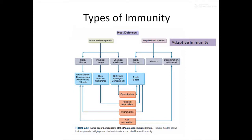There are mainly two types of immunity. The first is innate or inborn immunity - immunity we have from birth itself. The second is acquired or adaptive immunity, which we develop during our lifespan when we get exposed to pathogens. Each time we are exposed to a pathogen, our body tries to develop immunity against it, either for life or for a short period.